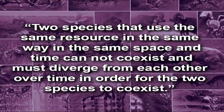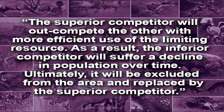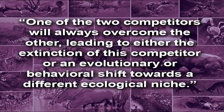For the two species to coexist, they must diverge from each other over time. One species will often exhibit an advantage in resource use. The superior competitor will outcompete the other with more efficient use of the limiting resource. As a result, the inferior competitor will suffer a decline in population over time, ultimately being excluded from the area and replaced by the superior competitor, leading to either extinction or an evolutionary or behavioral shift towards a different ecological niche.